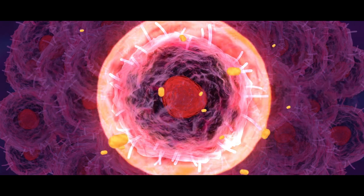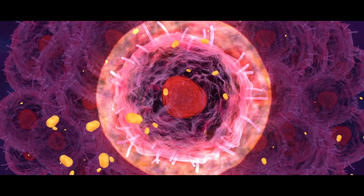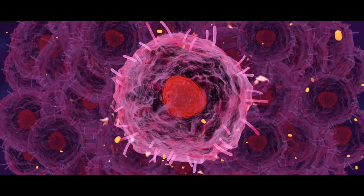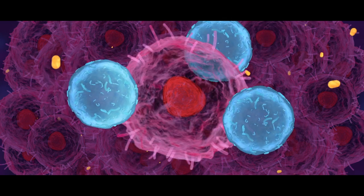What checkpoint inhibitors do is release the emergency breaks from the immune cells and de-shield the cancer cells. The cancer cells are then recognized as threatening and the immune system can do its job and get rid of them.